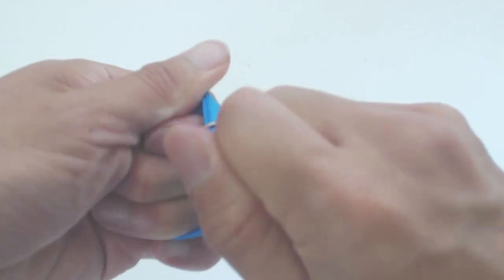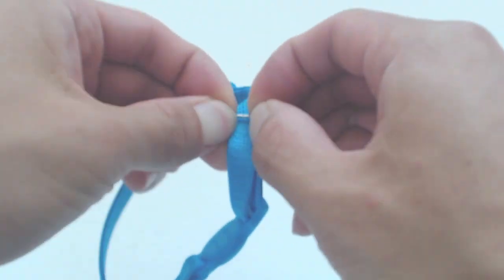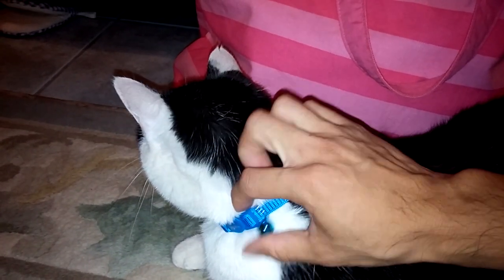The material on the band is a strong woven nylon, and the attachment clip for the bell is also durable metal. My cat normally hates collars, but this one didn't bother her at all.